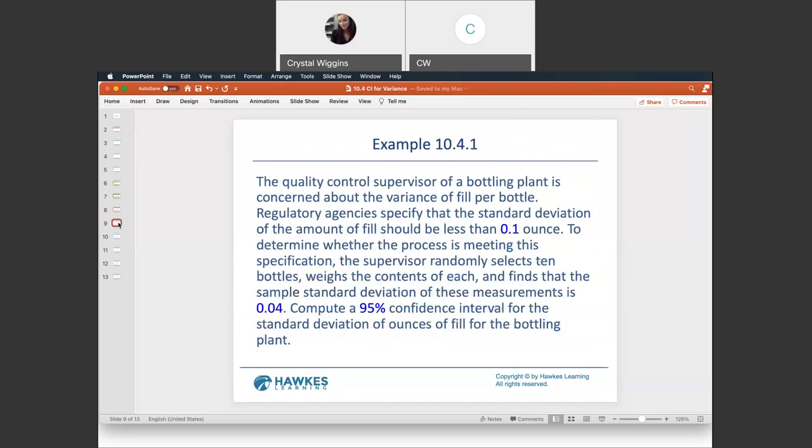Let's take a look at this example and follow our way through using our guru to find the critical values. The quality control supervisor of a bottling plant is concerned about the variance of fill per bottle. Regulatory agencies specify the standard deviation of the amount of fill should be less than 0.1 ounce. To determine whether the process is meeting the specification, the supervisor randomly selects 10 bottles, weighs the contents of each, and finds that the sample standard deviation of these measurements is 0.04. Compute a 95% confidence interval for the standard deviation of ounces of fill for the bottling plant.